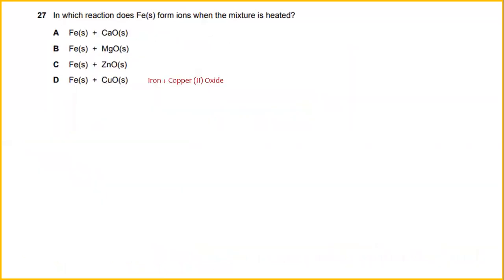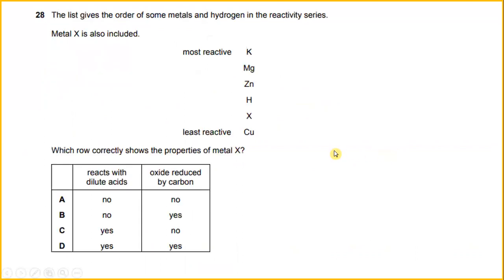In which reaction does iron form ions when the mixture is heated? The answer for this would be D. When the ions react with CuO, copper oxide, it will form iron ions when the mixture is heated.